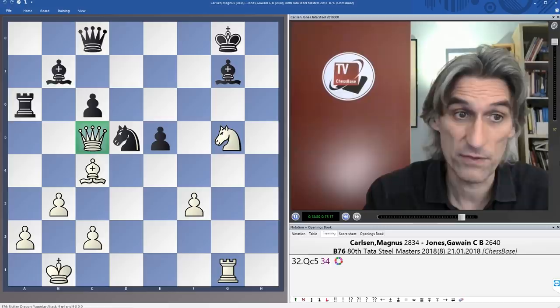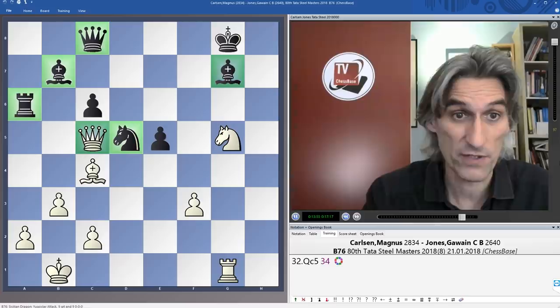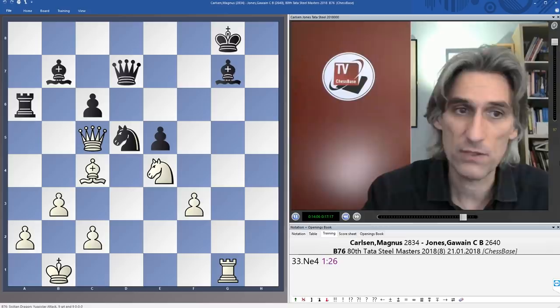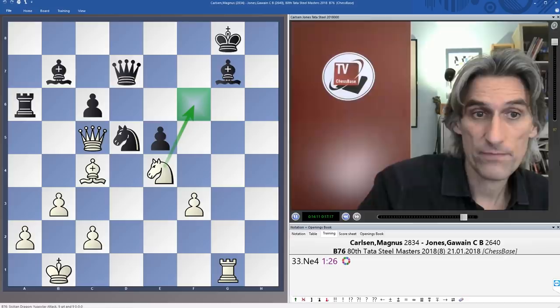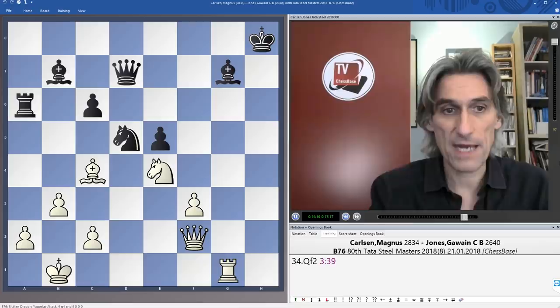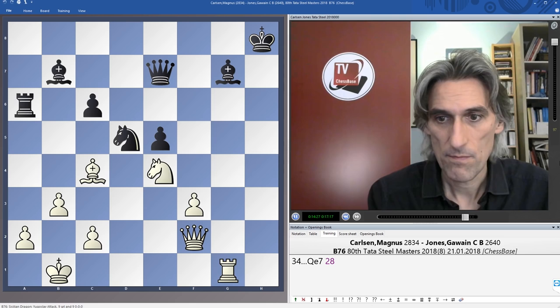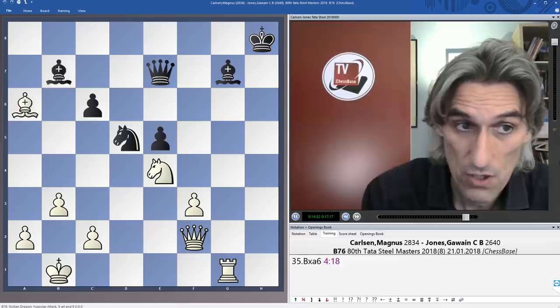Queen d7 played. Knight e4. Simple move. Keeping control and threatening a deadly check on f6 with a fork. Therefore, king h8. But now the queen just came back. Threatening a check. And knight f6 check. So queen e7. Stops the knight f6 idea.